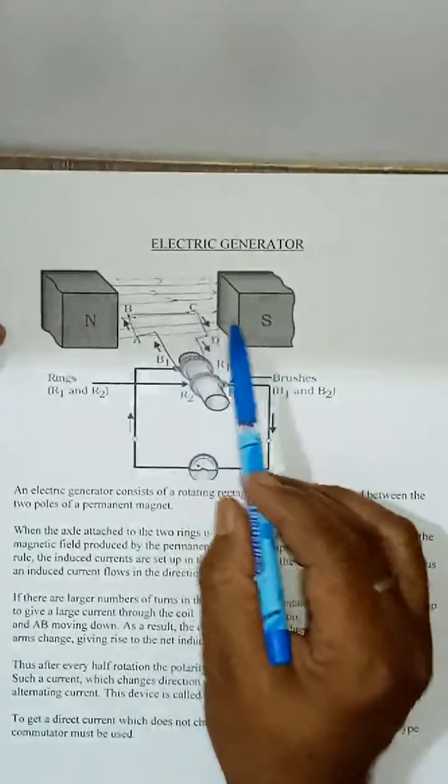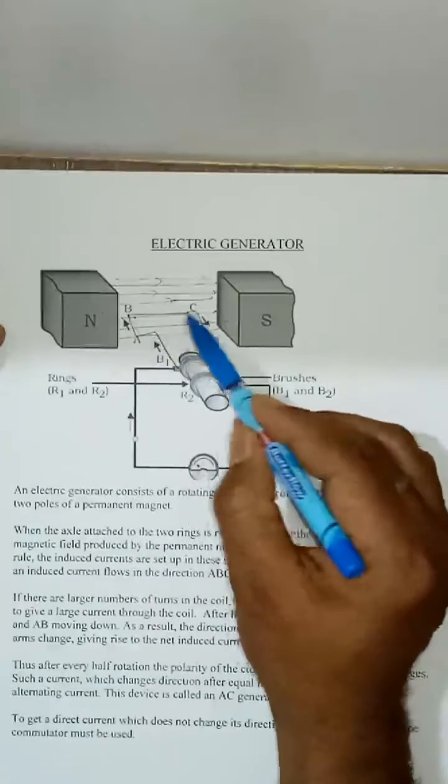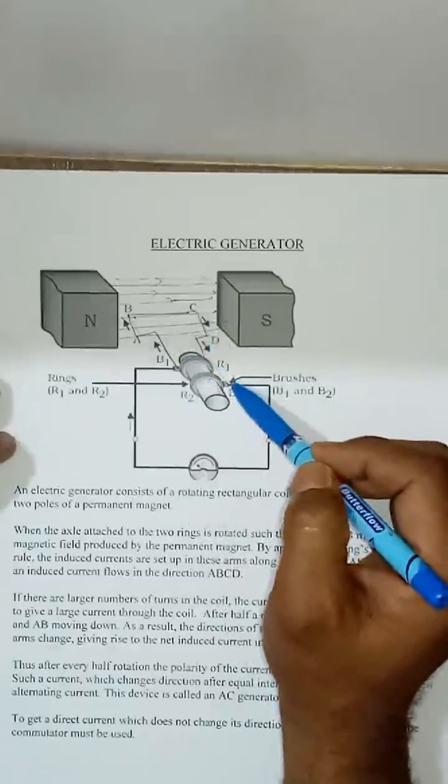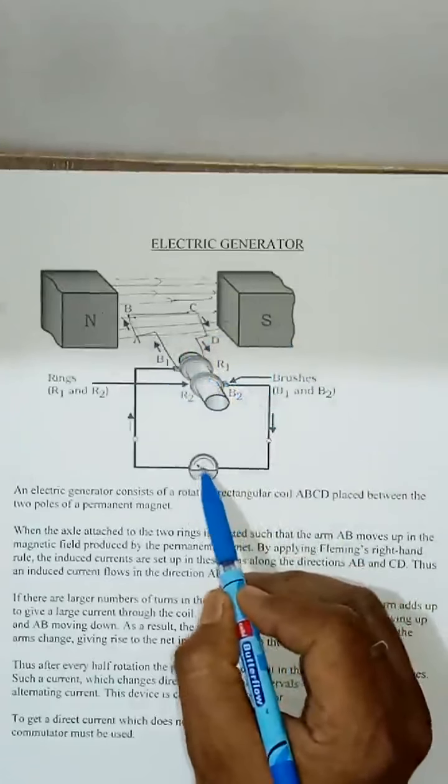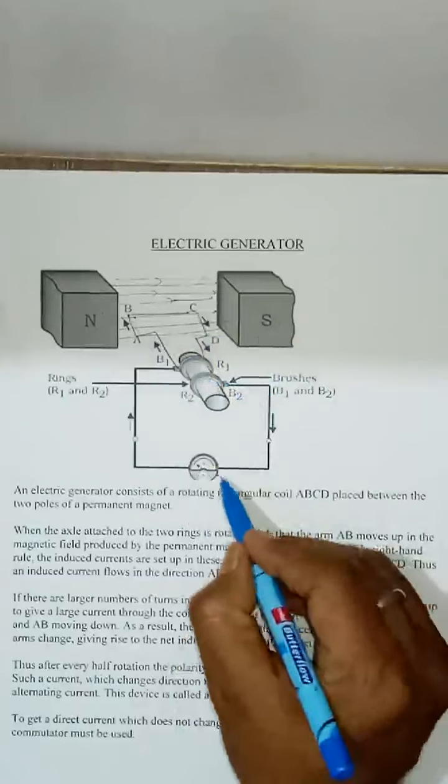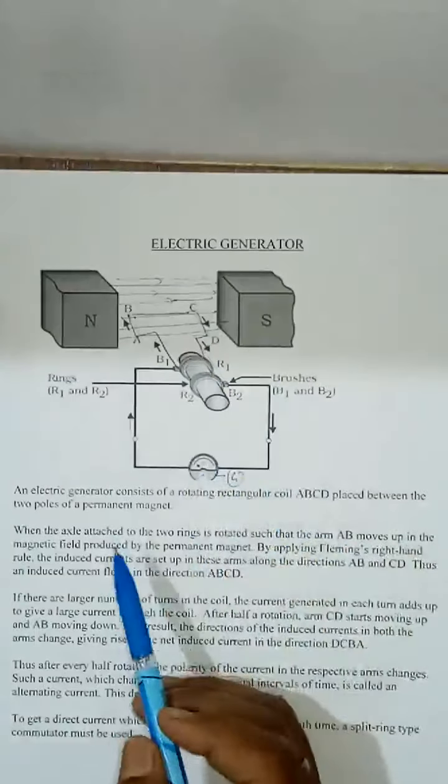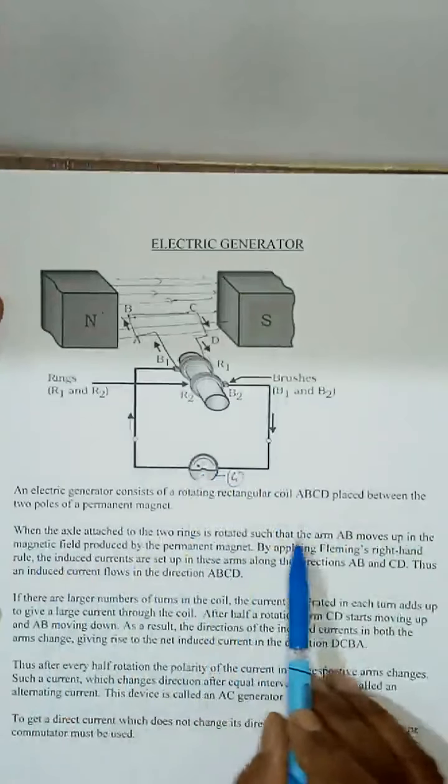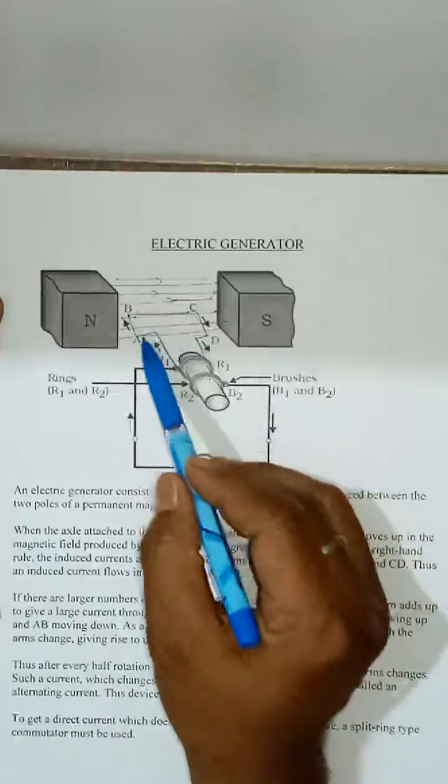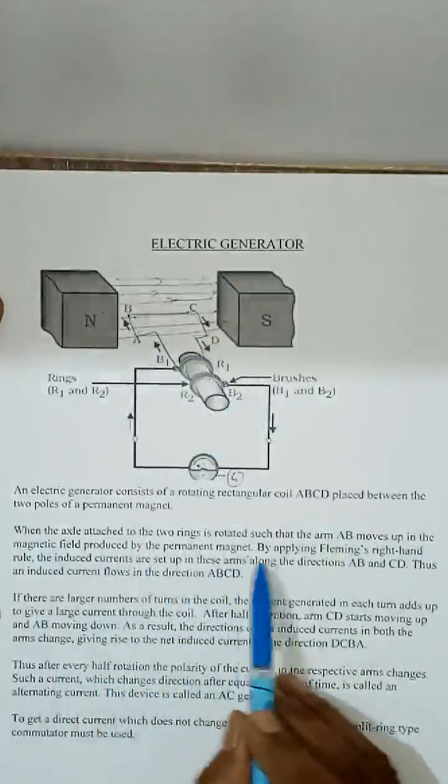And this happens, then the needle deflects within the galvanometer. This is what the needle deflects when the axle attached to the two rings is rotated so that the arm AB moves up and arm CD moves up in the magnetic field produced by the permanent magnet.